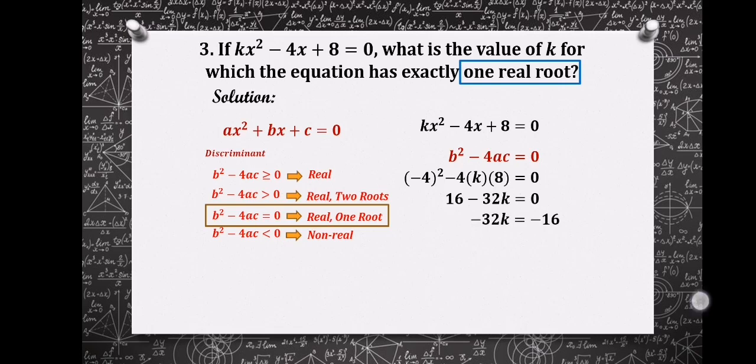We're going to transpose positive 16, so we'll have -32k = -16. Dividing both sides by -32, k is simply 1/2. So k = 1/2.